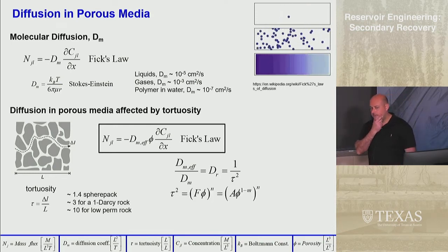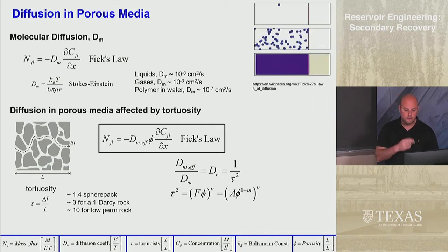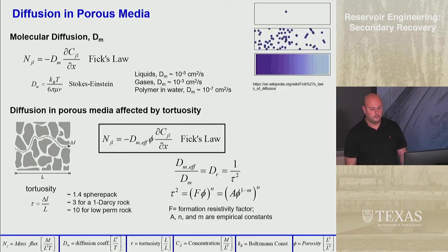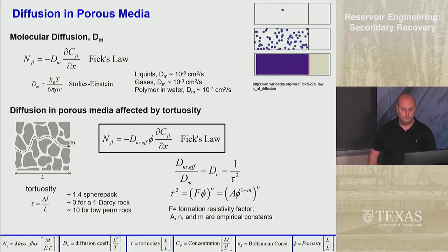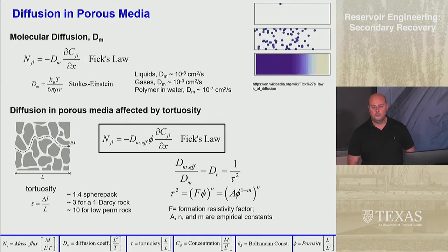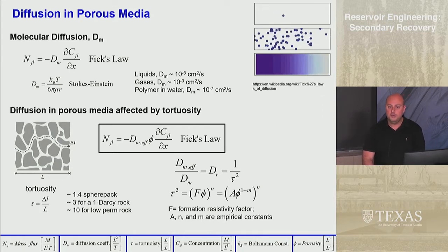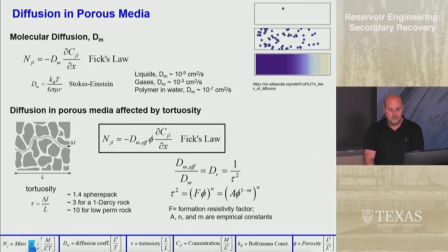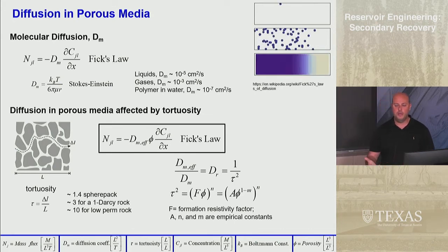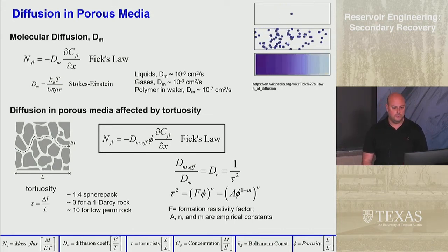You may have learned in formation evaluation that tortuosity is related to the formation resistivity factor F = A φ^(-m). We won't really deal with that — if we need a diffusion coefficient, I would give you the tortuosity to calculate the effective diffusion coefficient, or just give you the effective diffusion coefficient directly.